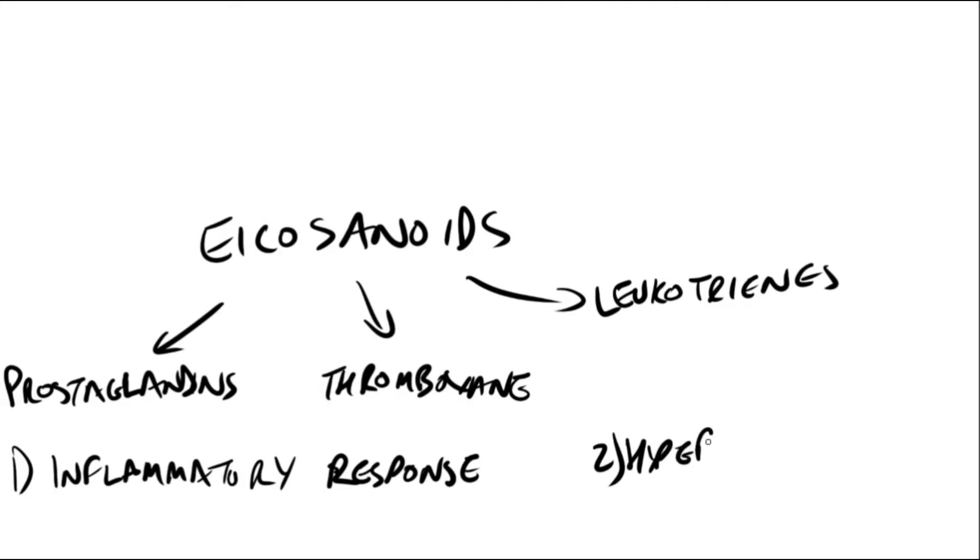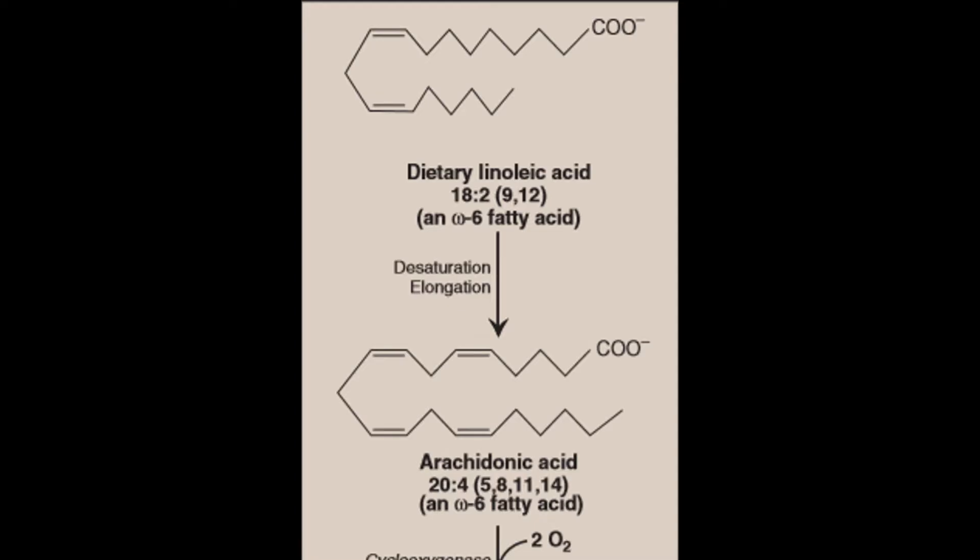The dietary precursor of prostaglandins is the essential fatty acid linoleic acid. It is desaturated and elongated to arachidonic acid, the immediate precursor of the predominant class of prostaglandins in humans.